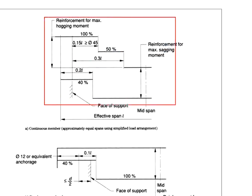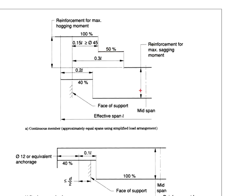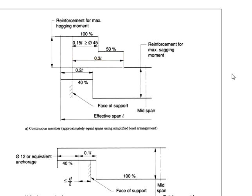Next, we look at the continuous slab. For a continuous slab, there will be a sagging moment at the mid-span and a hogging moment at the support. This involves both the bottom reinforcement and the top reinforcement. The bottom reinforcement will need to withstand the moment at the mid-span, whereas the top reinforcement should be placed near the support in order to withstand the hogging moment.